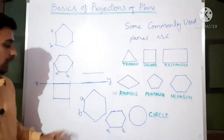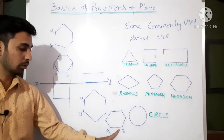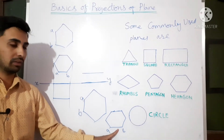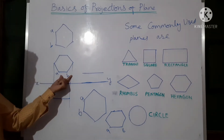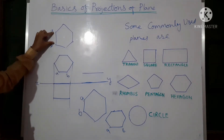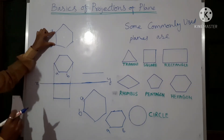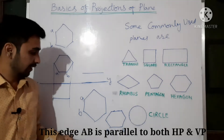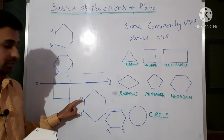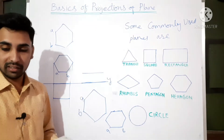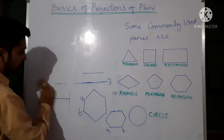So to summarize the terminology: edge H may be perpendicular to VP, or parallel to VP. Similarly, edge H parallel to HP and edge H perpendicular to HP. These are the cases with respect to HP and VP — edge parallel to VP, edge perpendicular to VP. Understand these terms and the basic diagrams.